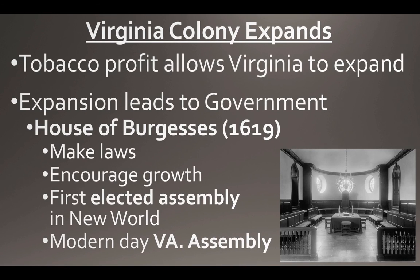The expansion driven by tobacco led to government. The House of Burgesses, established in 1619, was the first representative elected assembly in the New World, created to make laws as the colonies expanded. It eventually moved to Williamsburg as the capital of Virginia and evolved into the modern-day Virginia assembly, becoming a major point of state government.